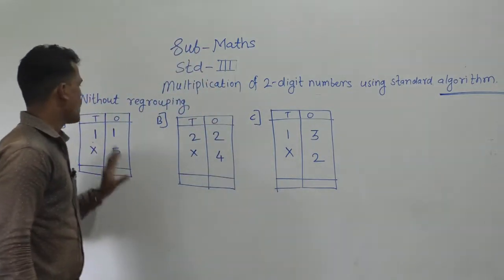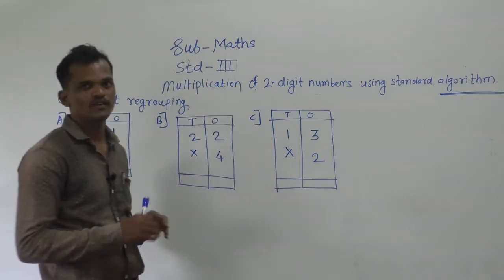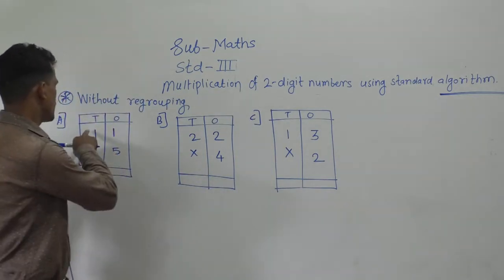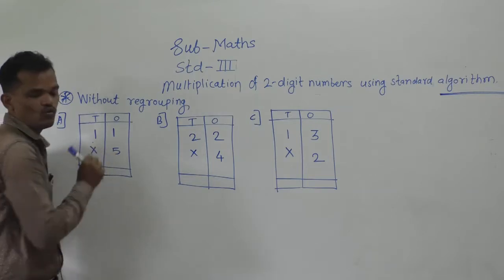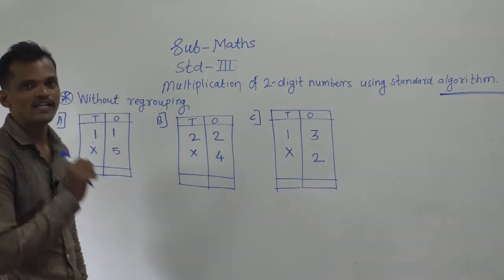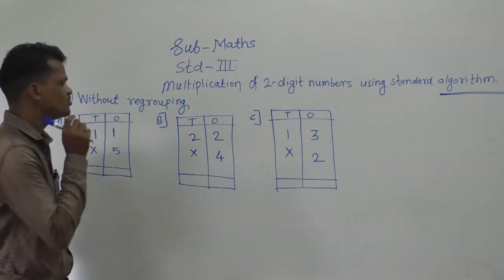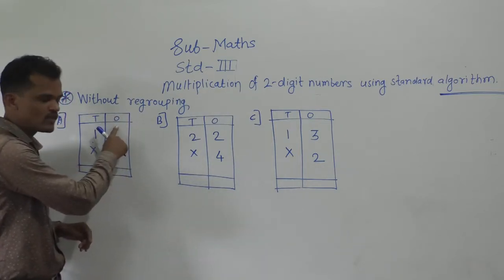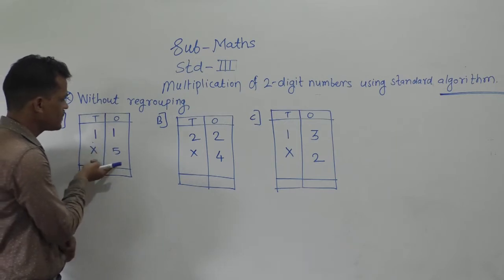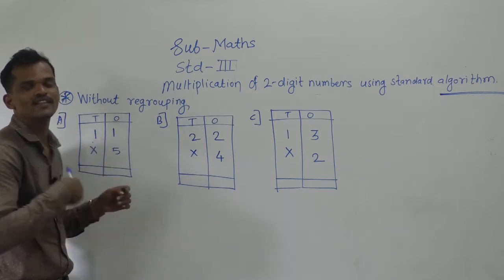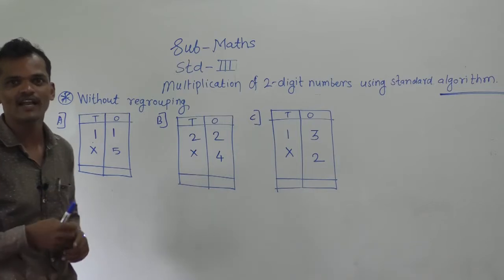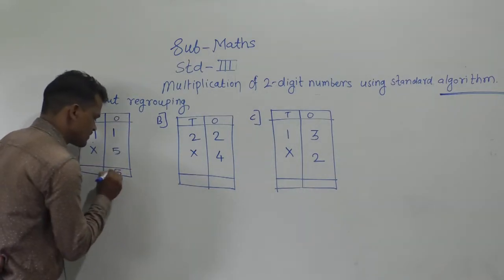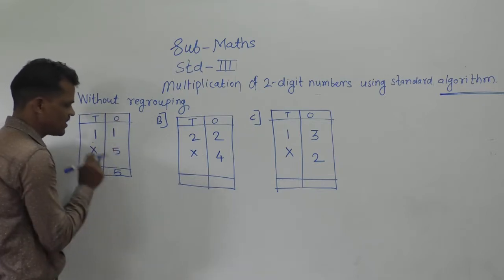See how to solve this example step by step. First, 11 into 5. While solving this example, you have to always multiply the ones place digit first. See here, 5 into 1. Recite the table of 5 up to 1: 5 ones are 5. Write it here. 5 ones are 5.